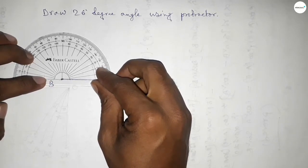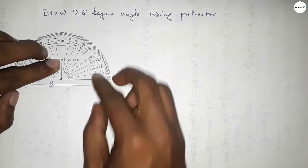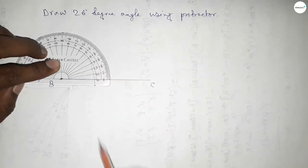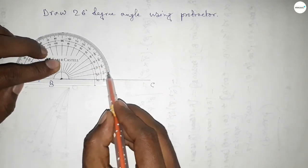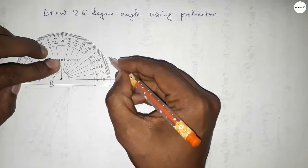Then counting the angles. So this is 0, 10, 20, 25, and this is 26 degrees. So this is a 26 degree angle.